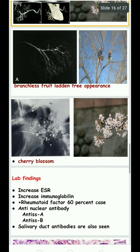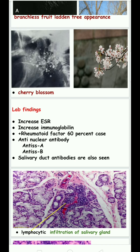In laboratory findings, there is an increase in erythrocyte sedimentation rate, increased hemoglobin, and rheumatoid factors in 60% of cases. Anti-nuclear antibodies — specifically anti-SS-A and anti-SS-B — are produced from plasma cells against virus and host cell nuclei. Salivary duct antibodies are also seen, and anti-nuclear antibodies are present in 75 to 80% of cases.